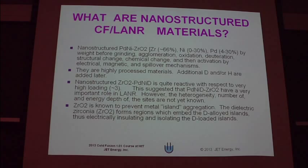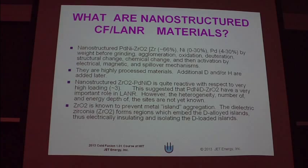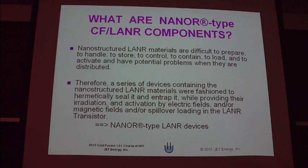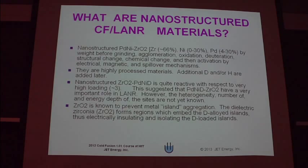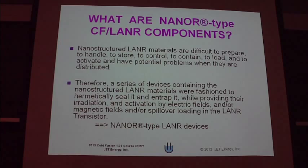The zirconia is known to prevent the island aggregation of the metals, and that results in what we're going to show you — a breakdown. The nanostructured materials are very difficult to prepare and hold and control. When we first started making them, we were losing our vacuum pumps and equipment — they were showing up everywhere. In fact, one of the people ended up having what we think was a bursitis from it, and I'm very worried about the health problems.